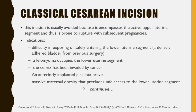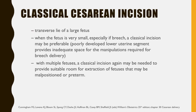The classical cesarean incision is usually avoided because it encompasses the active upper uterine segment and is prone to rupture in subsequent pregnancies. Indications for the classical cesarean incision include: difficulty exposing or safely entering the lower uterine segment; a leiomyoma occupying the lower uterine segment; cervical invasion by cancer; an anteriorly implanted placenta previa; massive maternal obesity precluding safe access; a transverse lie of a large fetus; when the fetus is very small, especially if breech; and with multiple fetuses where malpositioning or prematurity may require more room.